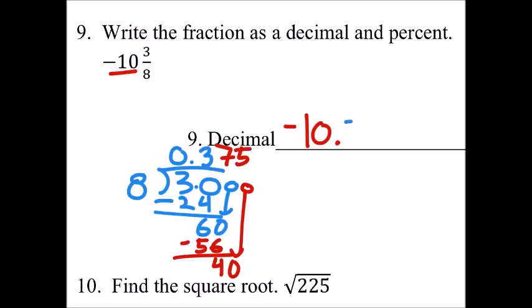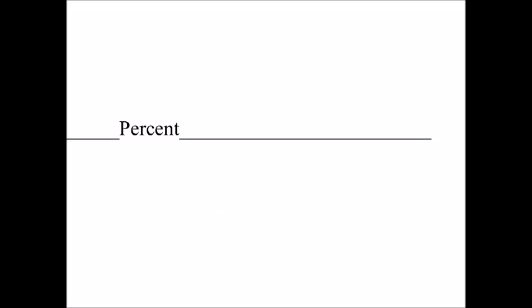So this is the decimal. Three, seven, five. That's the full decimal. Negative ten point three-seven-five. Negative ten point three-seven-five.